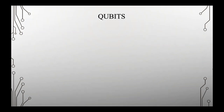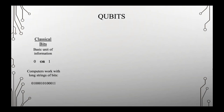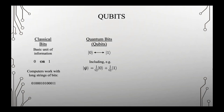In classical computing, the basic unit of information is zero or one, represented by a voltage — for example, zero volts for zero and five volts for one. Your computer works with long strings of these bits. There is a quantum analog to this called the quantum bit, or qubit, which also has zero and one. But the key feature is that a state can exist in any superposition of zero and one — you can have a large amount of zero and a little bit of one, or equal amounts of both.